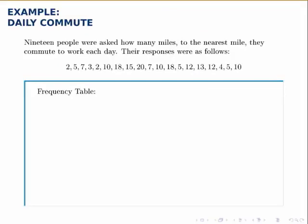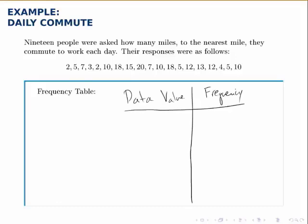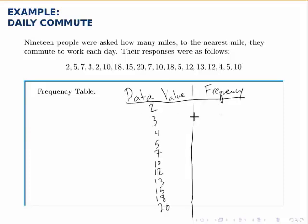Here we'll build a simple frequency table. 19 people were asked how many miles to the nearest mile they commute to work each day. The frequency table lists each possible data value and the number of times it occurs — two columns, one for the data values and one for frequencies. We go through the dataset and for each unique value, list it in the left column. Then we count how many times each occurs: for instance, 2 appears twice so it has a frequency of 2; 3 appears only once so it has a frequency of 1.